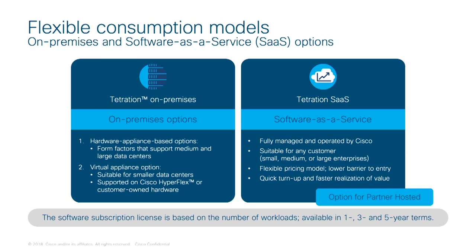Tetration as a platform is available as an on-premises delivery model, which can be either a dedicated hardware appliance — delivering the greatest scale and fully custom-built for best performance for large-scale or high-security environments — or a virtual appliance form factor. On top of that, the really popular option right now is Tetration SaaS — our software as a service architecture, fully redundant, delivered from the cloud on a per-workload basis. This really opens Tetration up to organizations of any size. It's easy and flexible to spin up, and customers love how quickly they can get up and running.